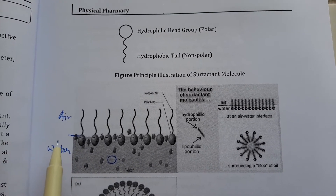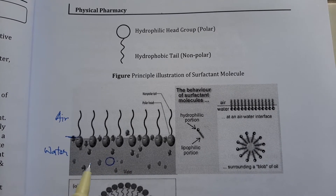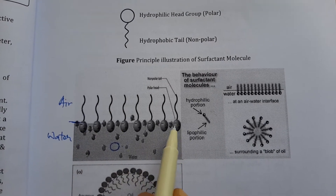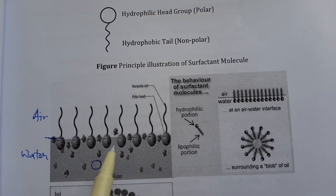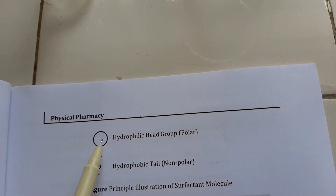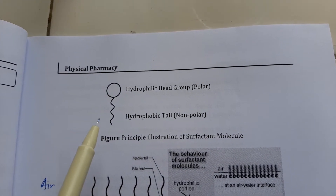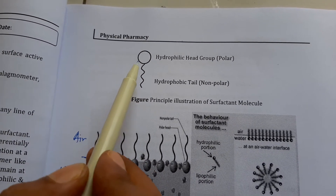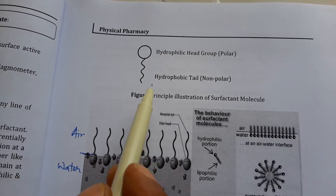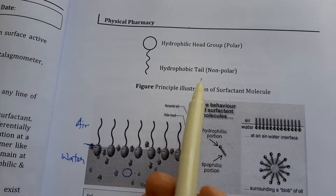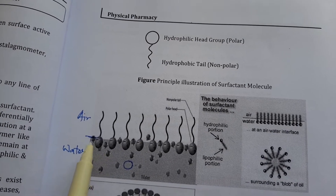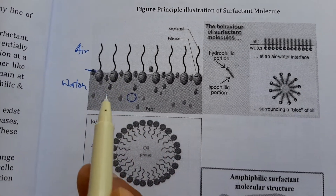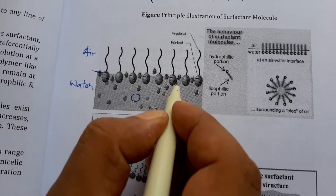Initially I have added a small concentration of surfactant in this water. That surfactant will adsorb at the surface of the air-water interface. The structure of surfactant is like this: one polar head is there and one non-polar tail is there. The head is hydrophilic and the tail is hydrophobic. Hydrophilic means water soluble or water loving; hydrophobic means water hating, that is non-polar in nature. When we add surfactant at low concentration, it will adsorb at the air-water interface. Again if I add some more surfactant, it will also adsorb at the interface.